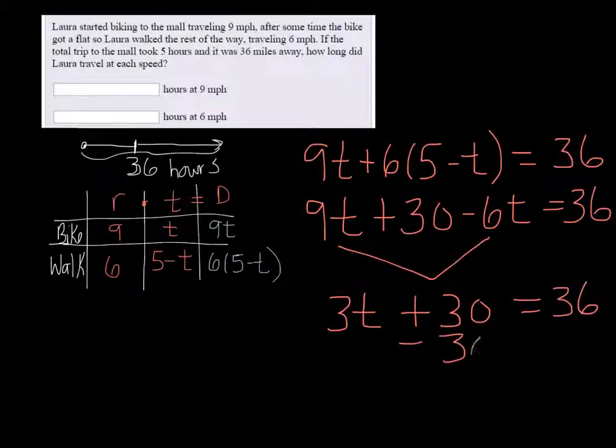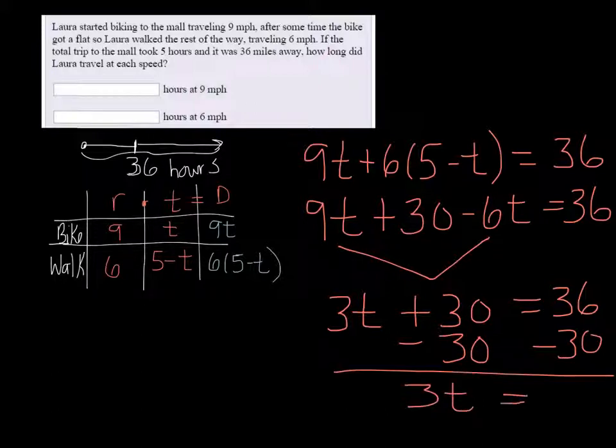Subtract the 30 on both sides, we get three t equals six. Well, if we divide both sides by three now, we get that t is two.